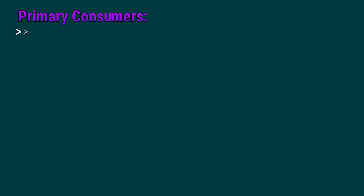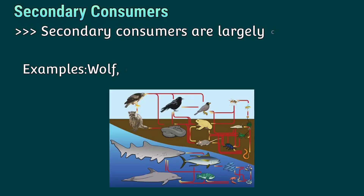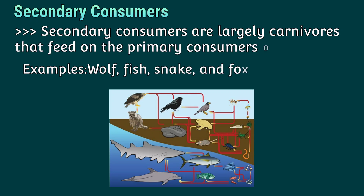Secondary consumers are largely carnivores that feed on primary consumers or herbivores. Examples include wolf, fish, snake, and fox.